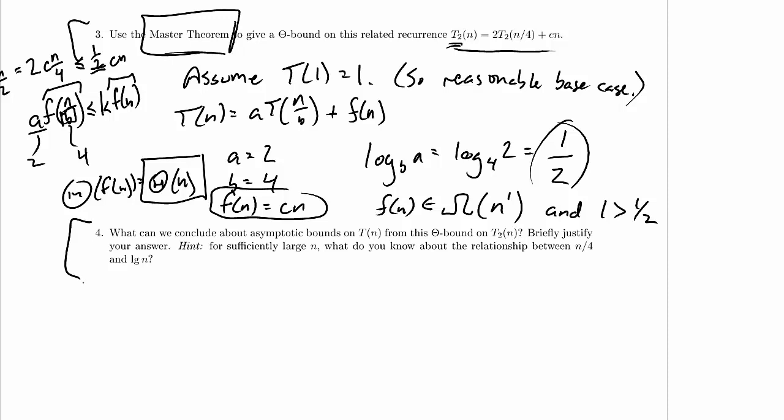So what can we conclude about asymptotic bounds on T(n) from this theta bound up here on T2(n)? Briefly justify the answer, and it says hint: for sufficiently large n, what do we know about the relationship between n/4 and log n?